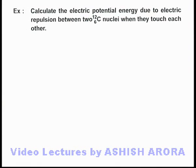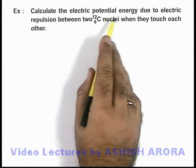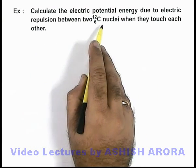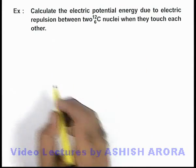In this example we are required to calculate the electric potential energy due to electric repulsion between two carbon nuclei when they touch each other.